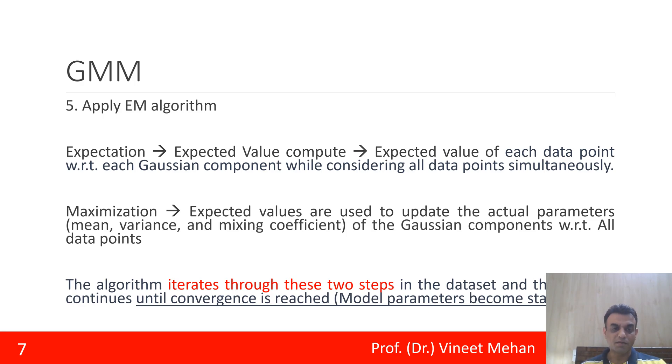Then is whatever is the computation, that computation is to be maximized. Maximized means we will update the actual parameters. What are the actual parameters? Like mean, variance, and mixing coefficient of the Gaussian components with respect to all the data points will be maximized.